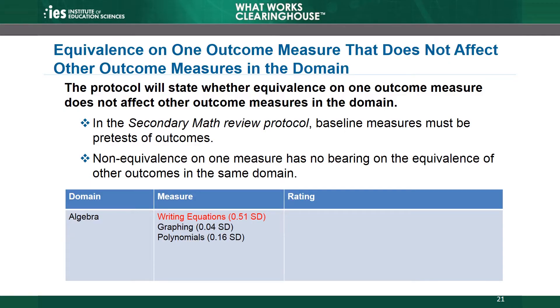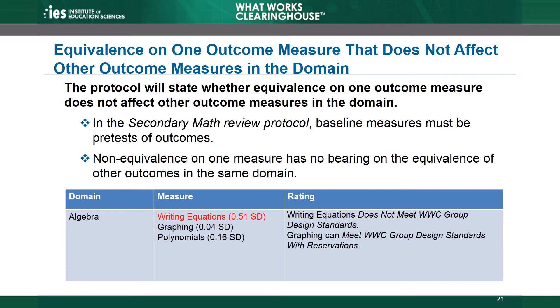Some protocols take a different approach and demonstrate equivalence outcome by outcome instead of domain by domain. These protocols state that studies must base equivalence on pretests of outcome measures. Under these protocols, non-equivalence of one measure has no bearing on the equivalence of other measures, even those in the same domain. For example, the secondary math review protocol assesses equivalence this way. The table shows an example with three outcome measures in the algebra domain. One of these — writing equations — does not demonstrate equivalence. Unlike the previous examples, the other measures in the domain are not affected. Although writing equations cannot meet WWC group design standards, the analyses of graphing and polynomials can.